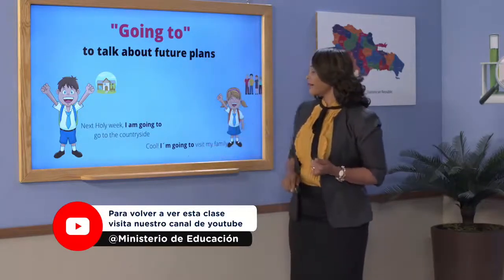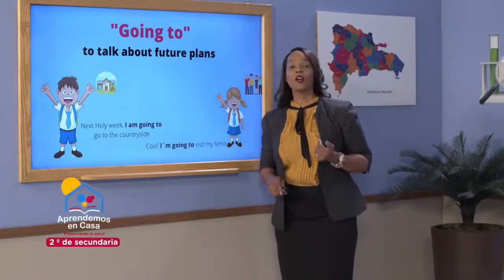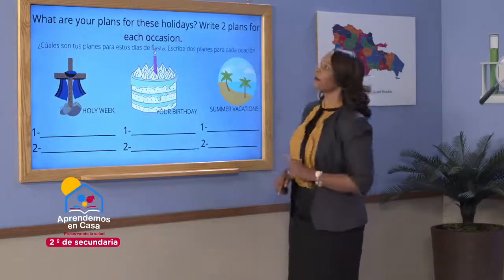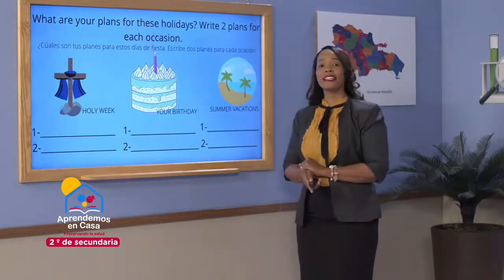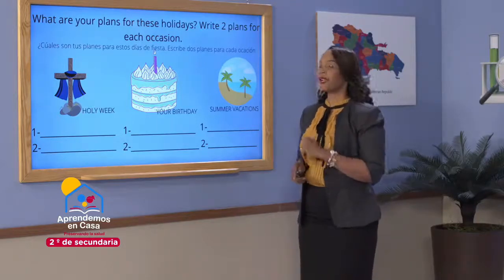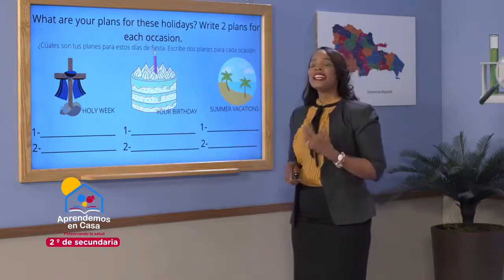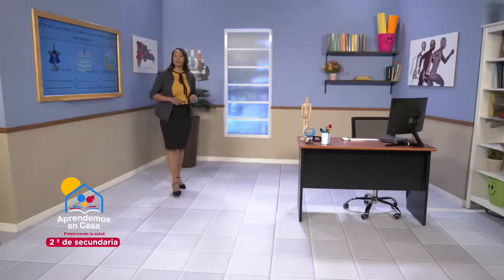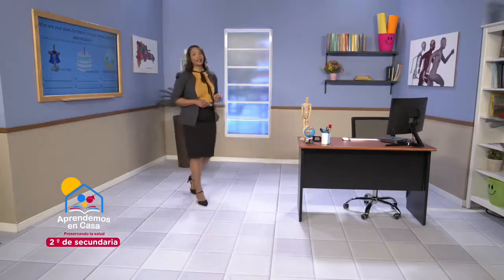Remember that when we're talking about future plans using 'going to', we use 'going to' and the action that we're planning to do. Look at this — example: I'm going to visit my family. Also, you had a homework to complete. I wanted you to complete this exercise by telling me what are your plans for these holidays. Did you complete your homework? Let's see some ideas that you could have used to complete this homework.